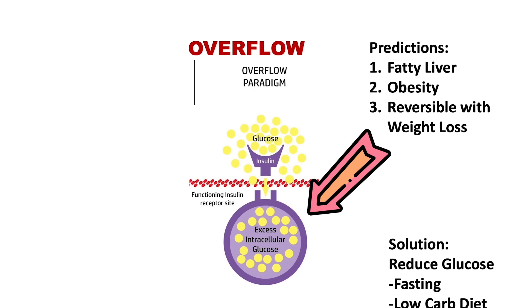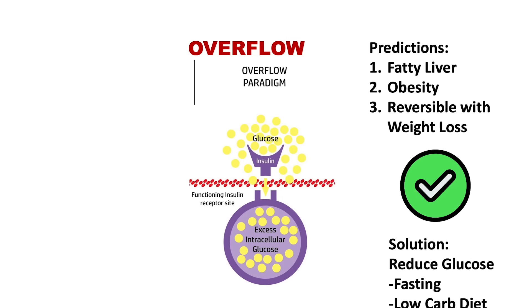As you lose weight, you would expect the insulin resistance to melt away, because that was the problem in the first place — too much glucose activating insulin, which pushes too much glucose into the cell until it's overfilled. Just like if you have a room with a door and too many people have already gone in, you simply can't put any more in even if you open the door. That's the overflow paradigm. The glucose does have an open door, but there's just too much inside already. As you get rid of some of the intracellular glucose through fasting, low-carbohydrate diets, and weight loss, the insulin resistance should start to reduce.